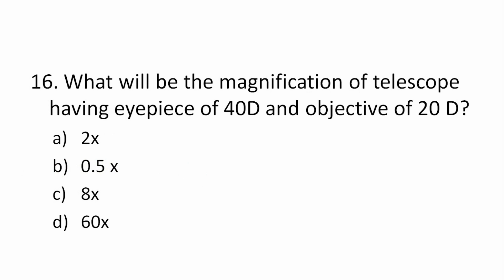Question 16: What will be the magnification of a telescope having an eyepiece power of 40 diopters and an objective of 20 diopters? The magnification is calculated by dividing the power of the eyepiece by the power of the objective lens.